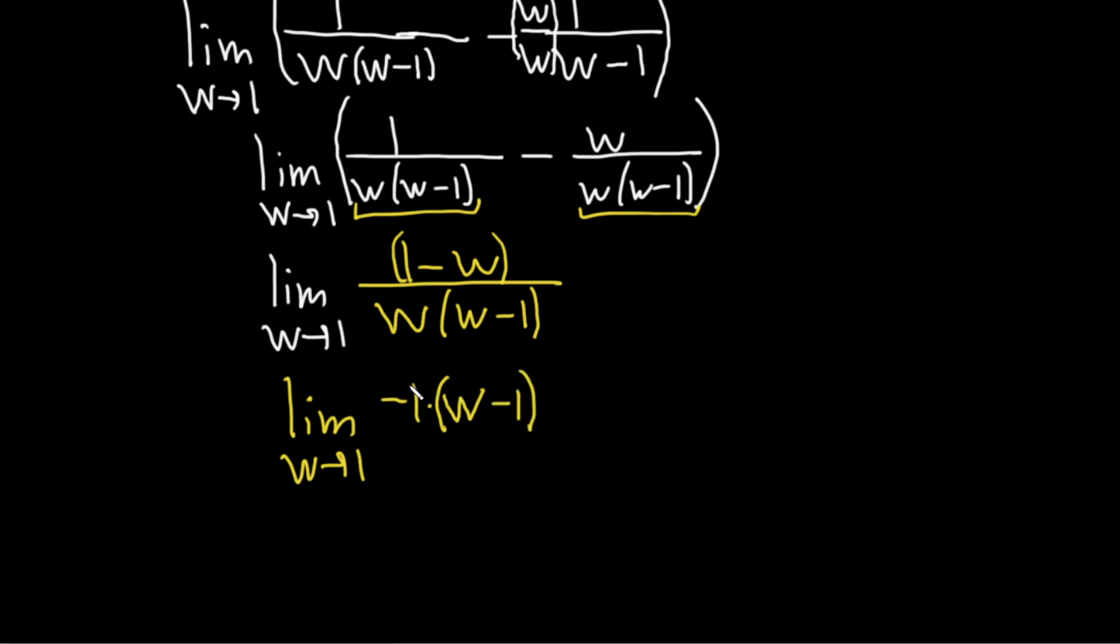Again, negative 1 times w is negative w. Negative 1 times negative 1 is positive 1. It's all being divided by w, w minus 1.